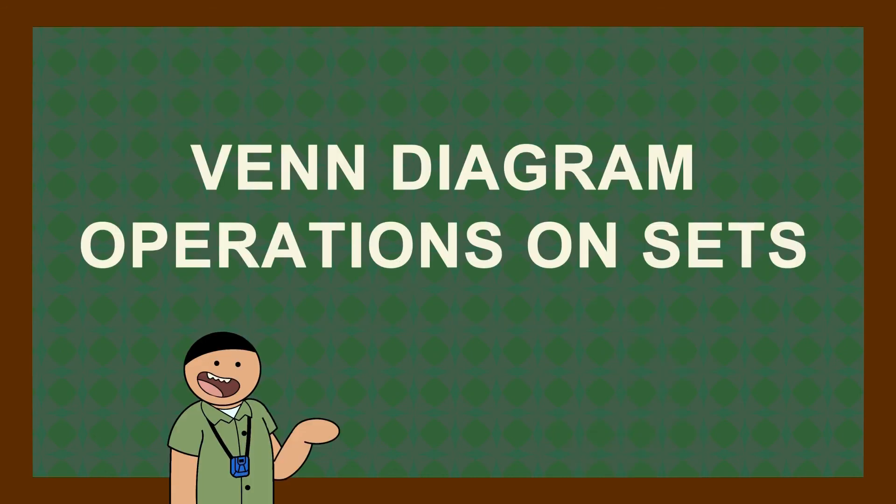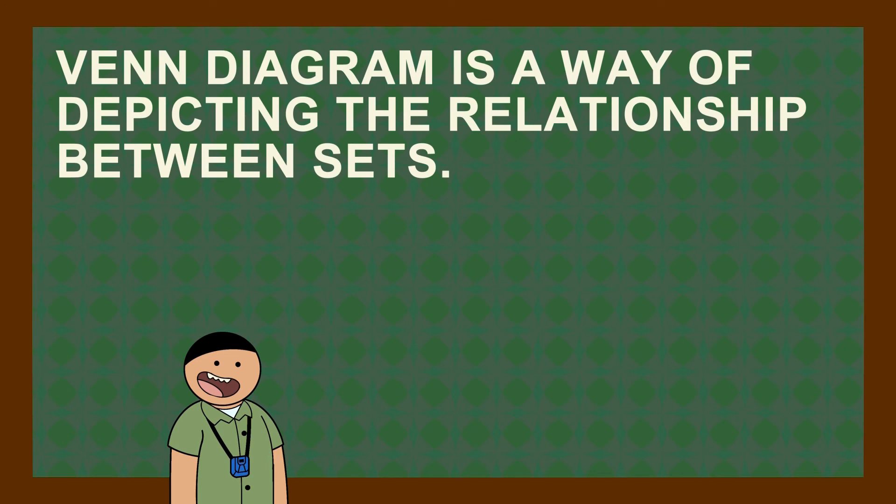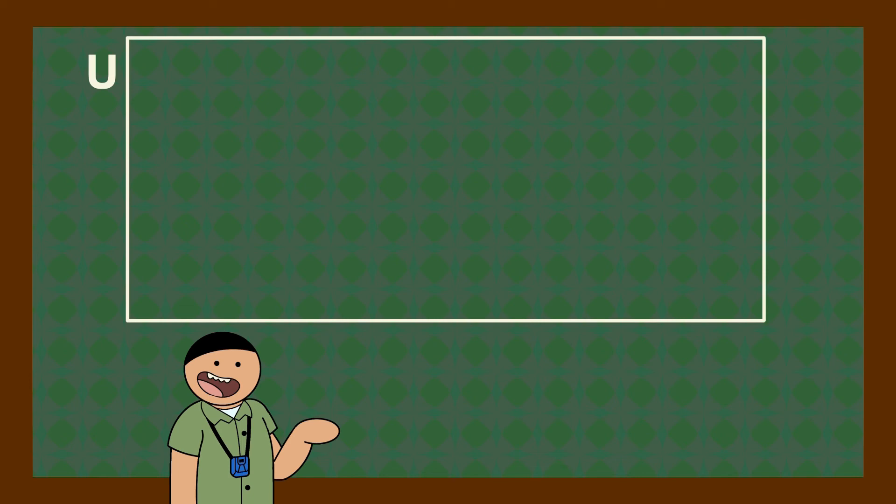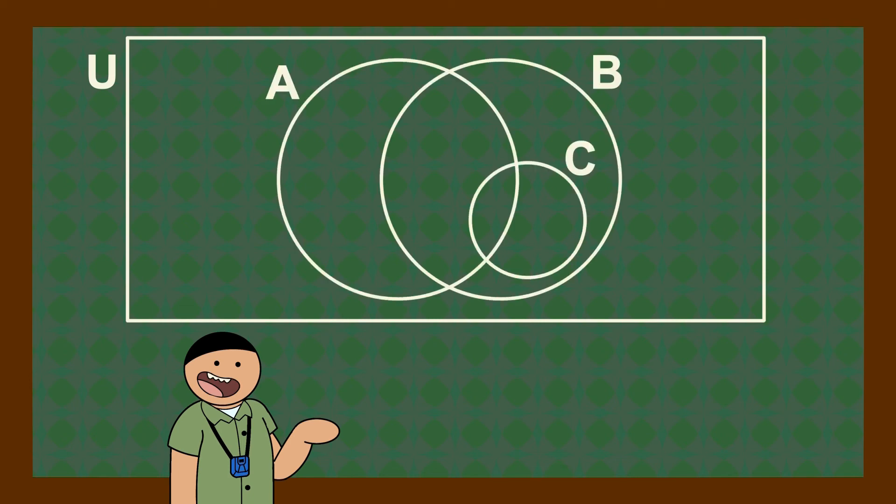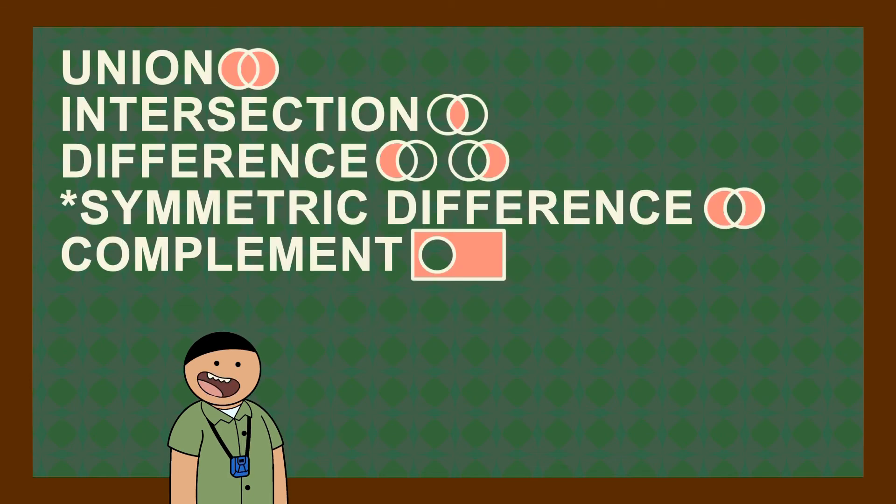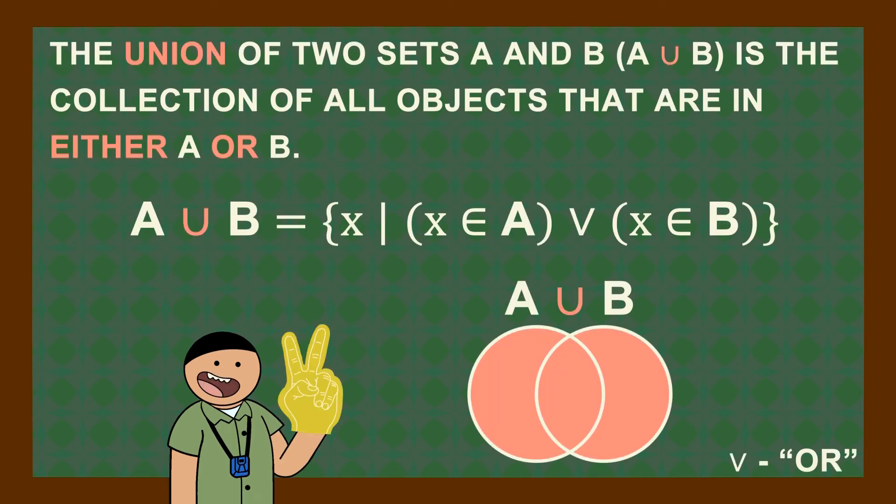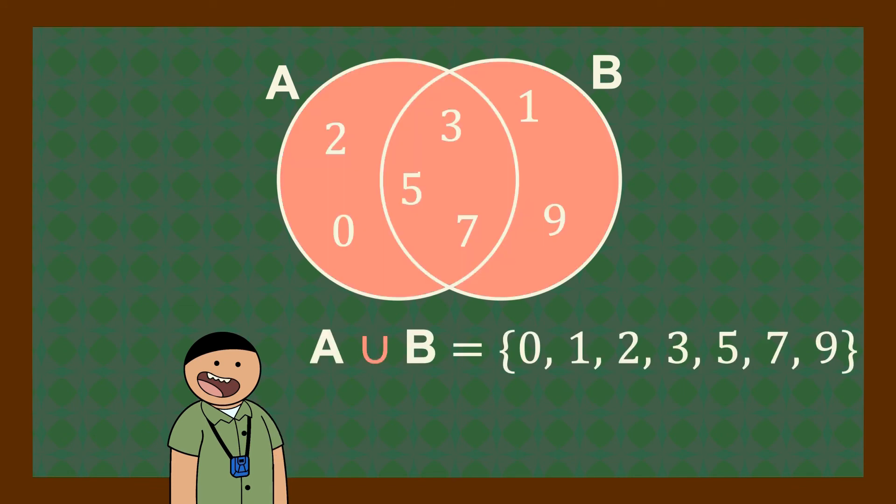We are now in Venn diagram and the operation on sets. Venn diagram is a way of depicting the relationship between sets. In a Venn diagram, the rectangle is the universal set while sets and subsets are the circles. We are going to use Venn diagram to show the operations on sets. The union of two sets A and B is the collection of all objects that are in either A or B. More like adding together the two sets. From the sets we have right now, A union B is 0, 1, 2, 3, 5, 7, 9.